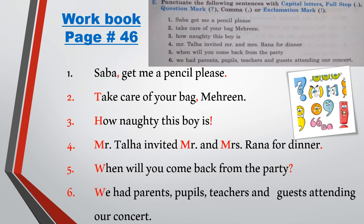Number five is: 'When will you come back from the party?' The first letter W will be capital. At the end of the sentence, we put a question mark because a question is asked.